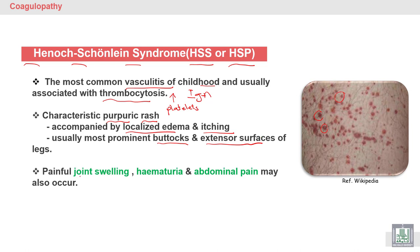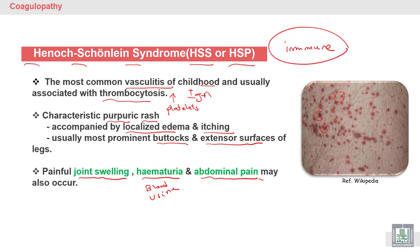Henoch-Schönlein purpura also leads to painful joint swelling, hematuria (blood in the urine), and abdominal pain due to attacking of blood vessels. It is an immune vasculitis — immune because IgA attacks the blood vessels of children.